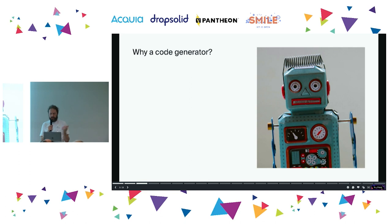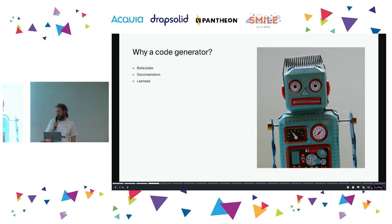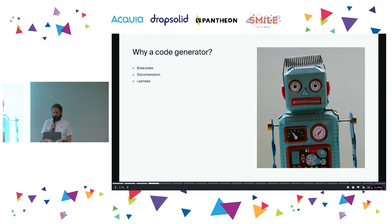Why use code generators? The first reason is to generate all the boilerplate code that is tedious to write — Drupal has a lot of that, but really everything has a lot of boilerplate. The second reason is documentation, because it saves you time looking things up. And the third is just plain old laziness. I am one of the laziest developers I know — I will spend weeks going down a rabbit hole to write a condiment parser because it annoys me to have to keep passing the mustard.